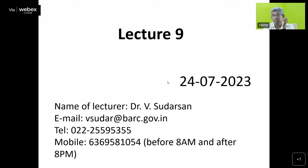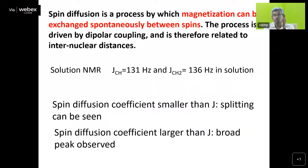Now let us start lecture number 9. I will briefly mention what we covered last class for continuity. Last class we discussed about a very important and versatile technique known as CP — cross-polarization — combined with magic angle spinning. That is a widely used technique for getting signals from carbon-13, silicon, phosphorus, and nitrogen-15. These are spin-half nuclei but their natural abundance is very small, making it very difficult to get meaningful information because you cannot record NMR for very long times due to field fluctuations and pulse stability problems.